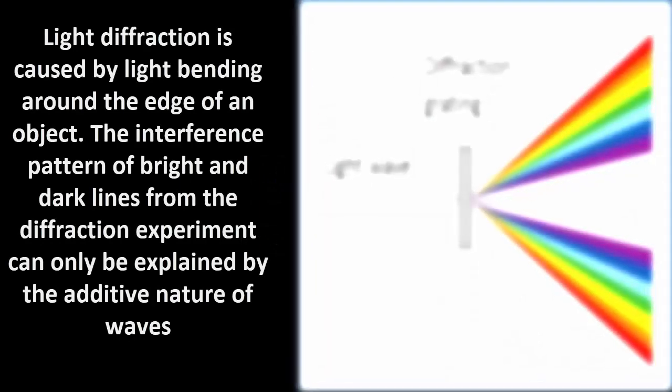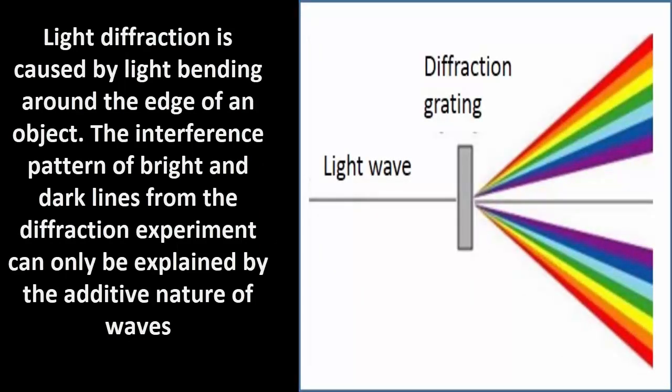Light diffraction is caused by light bending around the edge of an object. The interference pattern of bright and dark lines from the diffraction experiment can only be explained by the additive nature of waves.